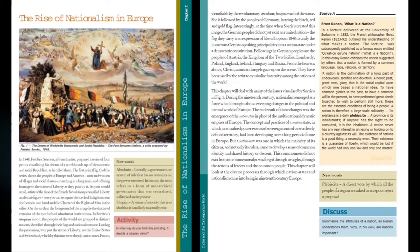Social republic means a republic country headed by elected representatives of the government in which social principles are followed. The first print, Figure 1, shows the people of Europe and America — men and women of all ages and social classes — marching in a long train and offering homage to the Statue of Liberty as they pass by it. Homage means respect or honor given to a particular thing.